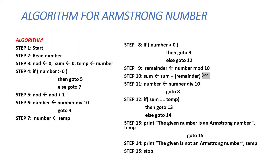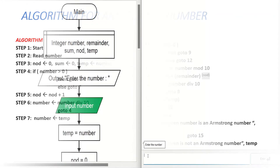Once the condition fails it moves to Step 12, which checks if sum is equal to temp. If this condition is satisfied, it moves to Step 13 and prints that the given number is an Armstrong number, then goes to stop. If it fails, it prints that the given number is not an Armstrong number, then goes to stop.